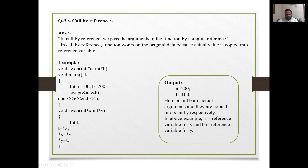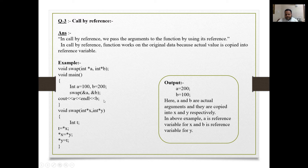Taking 'swap' as a function name example: in the main function I declare integer a = 100 and b = 200, then call the swap function. The function definition comes after. I am calling the function with '&a' and '&b', then printing a and b using cout.